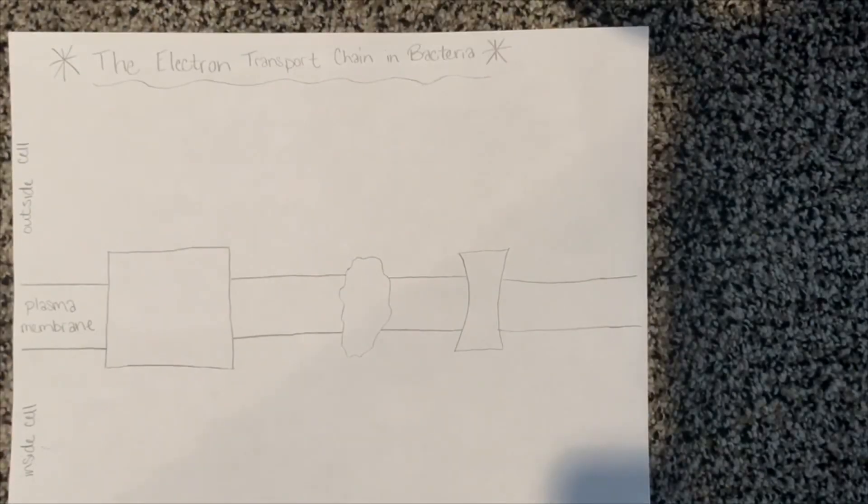The electron transport chain in bacteria. Bacteria do not have mitochondria, so they must make their ATP using some other structure in the cell. The electron transport chain process happens in the cell membrane of bacteria. Overall, hydrogen ions are pumped out of the cell as they donate their electrons to the various electron carriers in the chain. They are then pumped back in at the very end, which is the specific part of the chain that produces ATP for the bacterial cell to use.